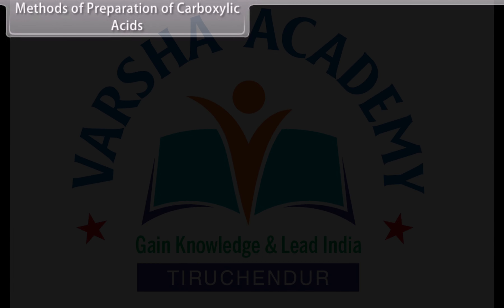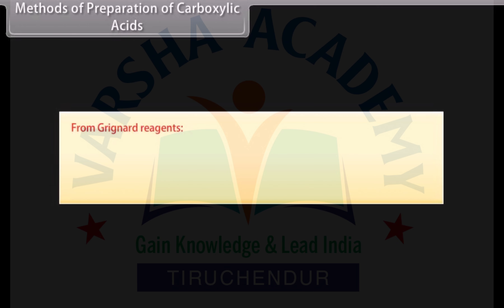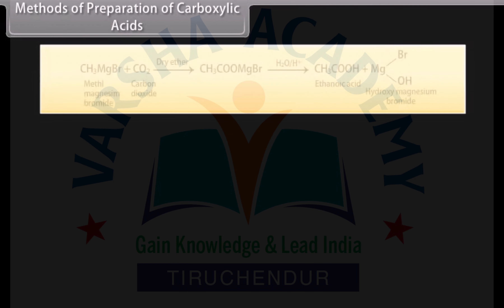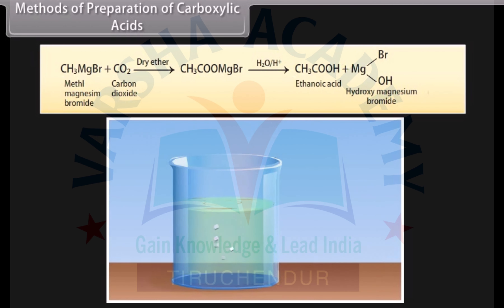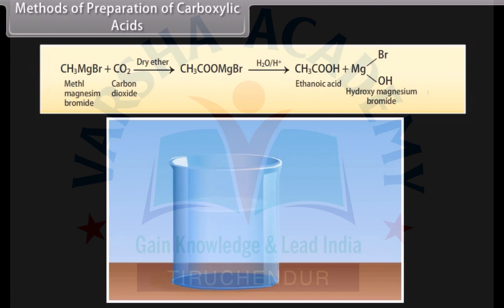From Grignard reagents: Grignard reagents, when treated with carbon dioxide in the presence of dry ether, form salts of carboxylic acids, which in turn give carboxylic acids after acidification. Methyl magnesium bromide reacts with carbon dioxide in the presence of dry ether to form a salt of carboxylic acid, which gives ethanoic acid and hydroxy magnesium bromide after acidification.